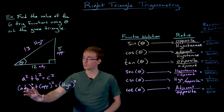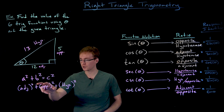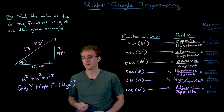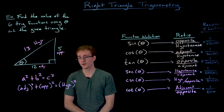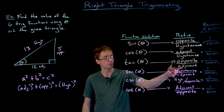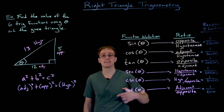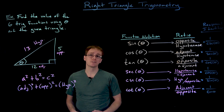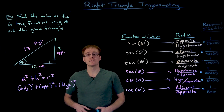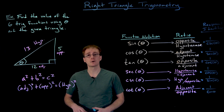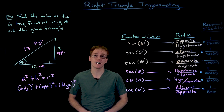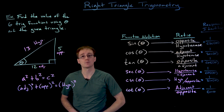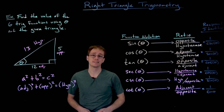Here we have the Pythagorean theorem written as adjacent side length squared plus opposite side length squared equals hypotenuse side length squared. These are looking a little bit like our trig functions or ratios — they just don't have anything in the denominator. What we're going to do next is divide both sides of this equation by one of these three quantities, and depending on which quantity we divide by we're going to get another one of our trigonometric identities — what we're going to call the Pythagorean identities.